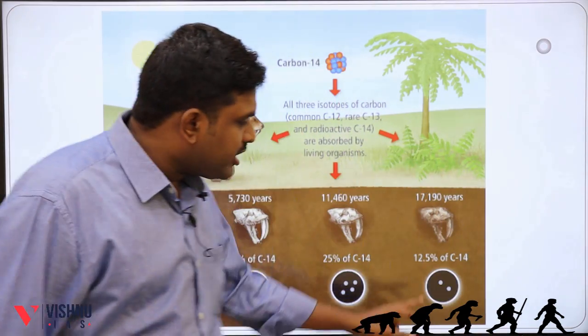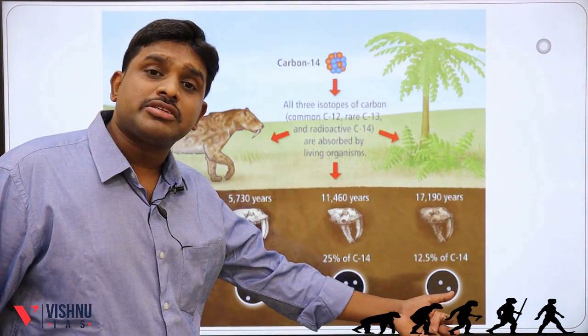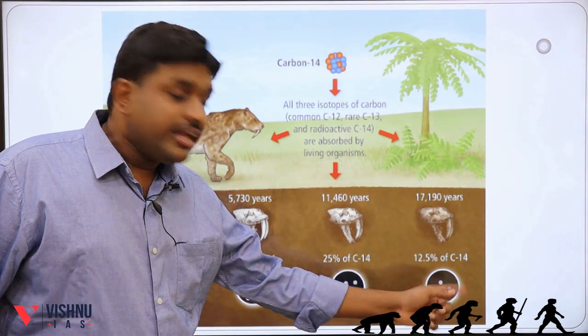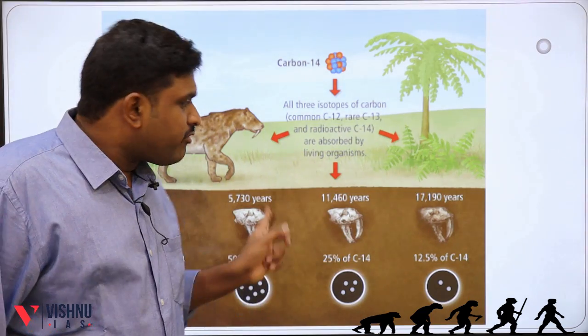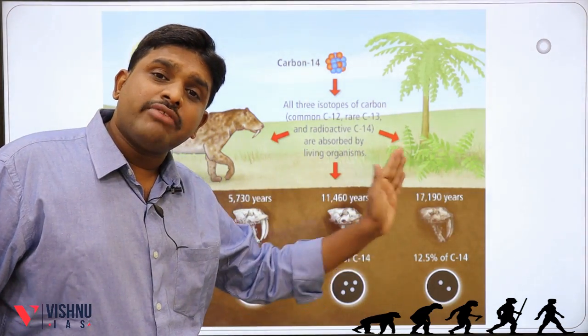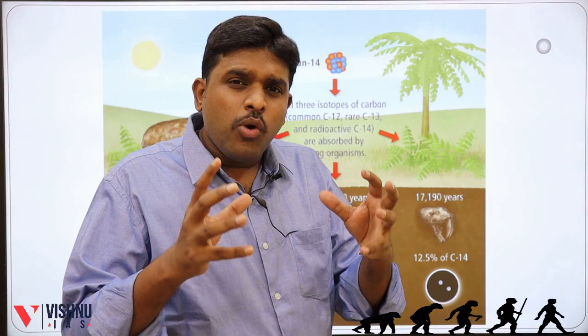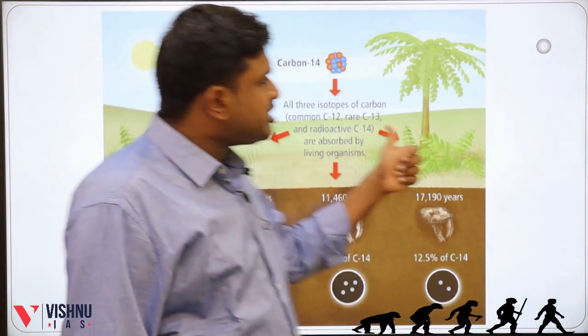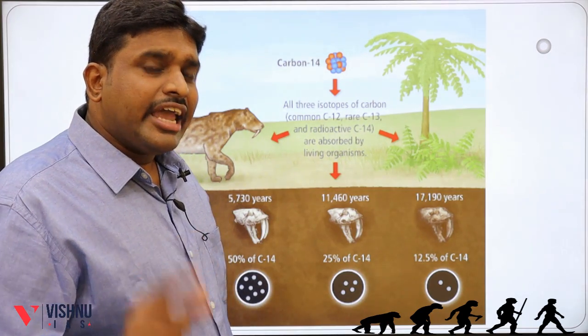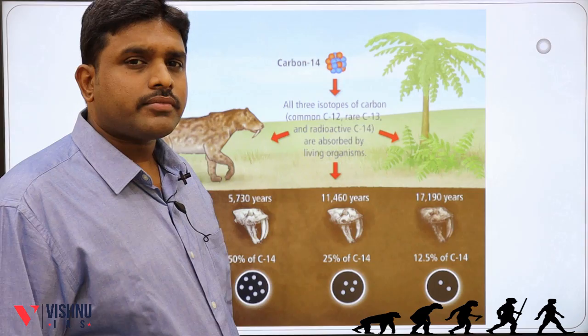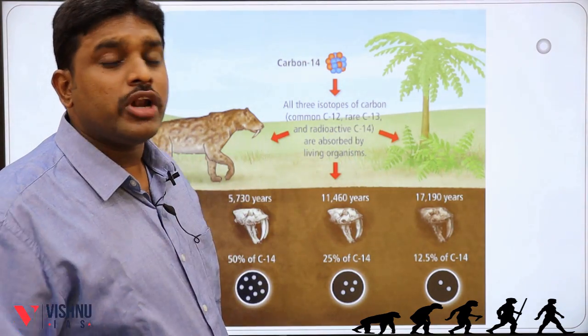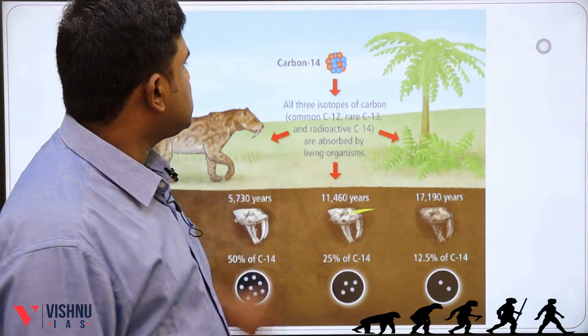In this way we will be finding the time period. For example, if C14 is at 6.25%, then it shows 17,190 plus 5,730 years back. If it is even lower, then 17,190 plus 5,730 plus 5,730 years back. So the amount of radioactive C14 present in the fossil tells us how many years back it is. However, there is a limitation: radiocarbon dating is helpful only for fossils up to 50,000 years old, not more.